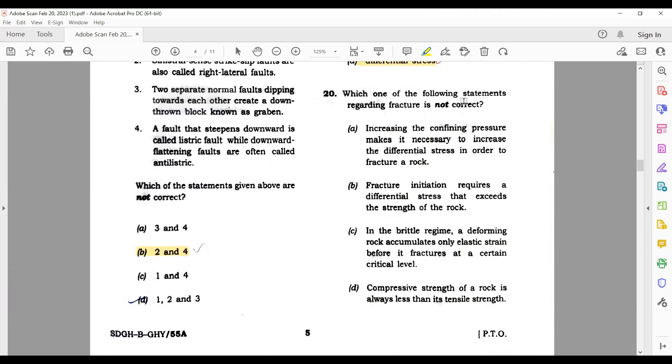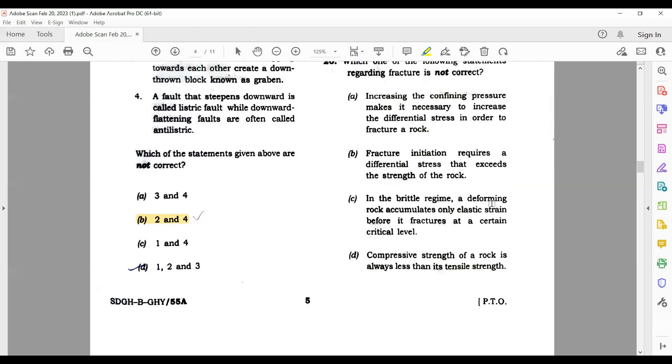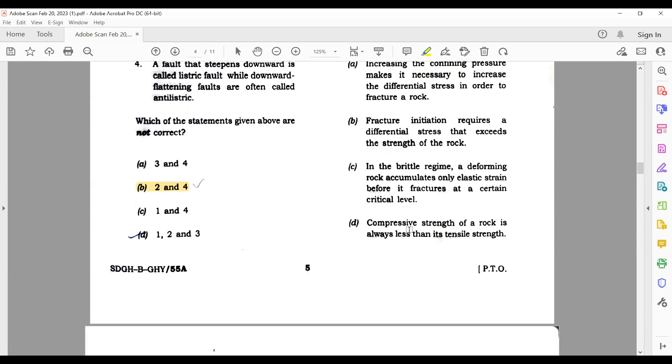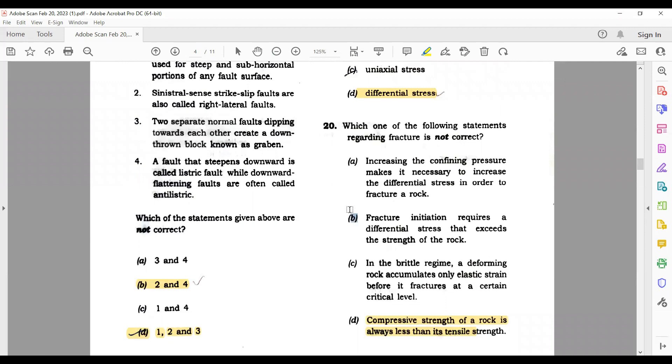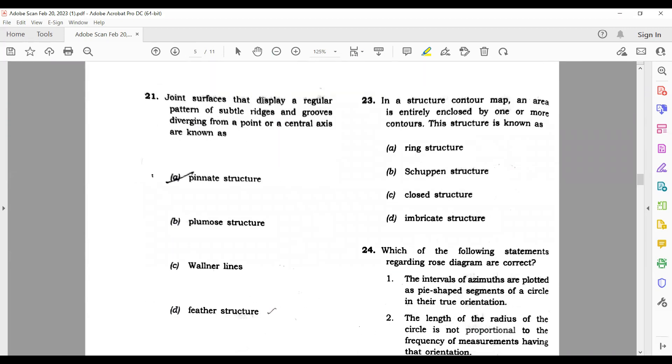Which one of the following statements regarding fractures is not correct? Increasing the confining pressure make it necessary to increase the order of fracture - correct. Fracture initiation requires a differential stress that exceeds the strength - also correct. In a brittle regime deforming, rock accumulates only elastic strain before it fractures at a certain critical level - again correct. Compressive strength of a rock is always less than its tensile - this is wrong. It can be more than the strength in some cases. So D is your correct option.